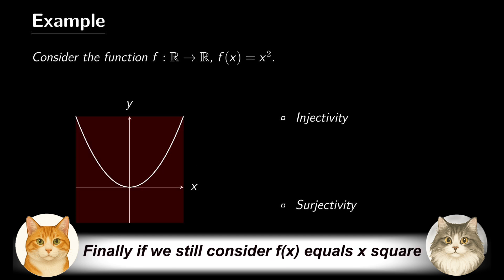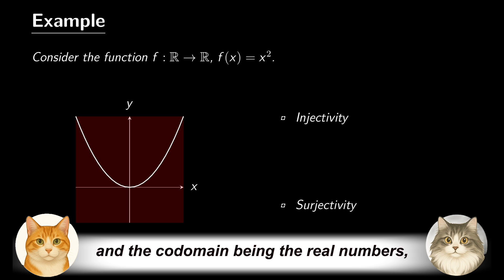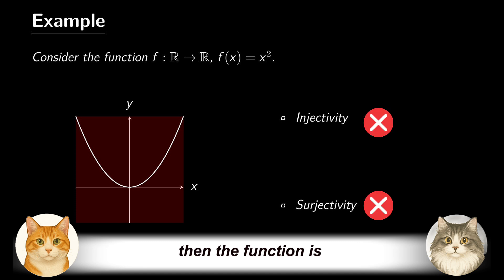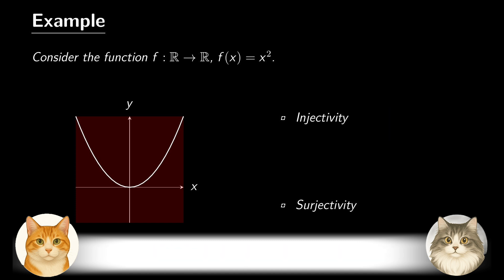Finally, if we still consider f(x) equals x squared, with both the domain and the codomain being the real numbers, then the function is neither injective nor surjective, as explained in the previous discussion. We summarize the conclusions in the following table.